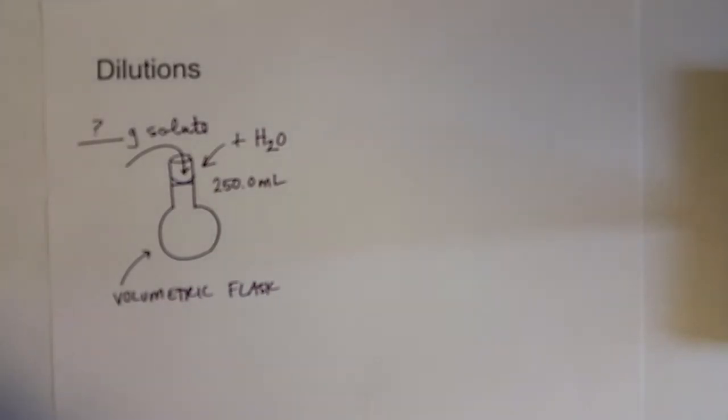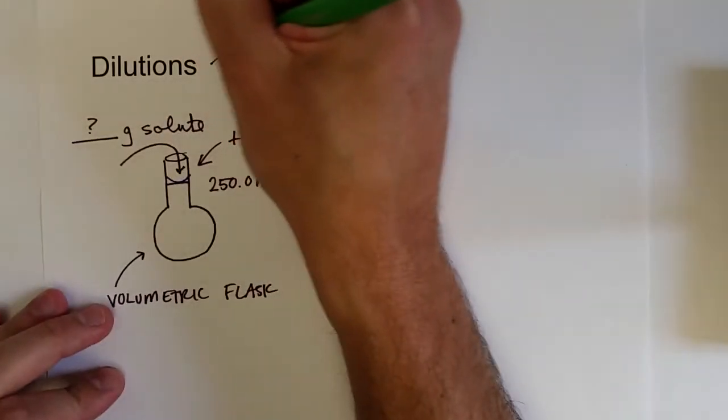So that's the first direct way to make a solution. If the solute's a liquid you could measure out the volume of it. Another way to make solutions is by dilutions.